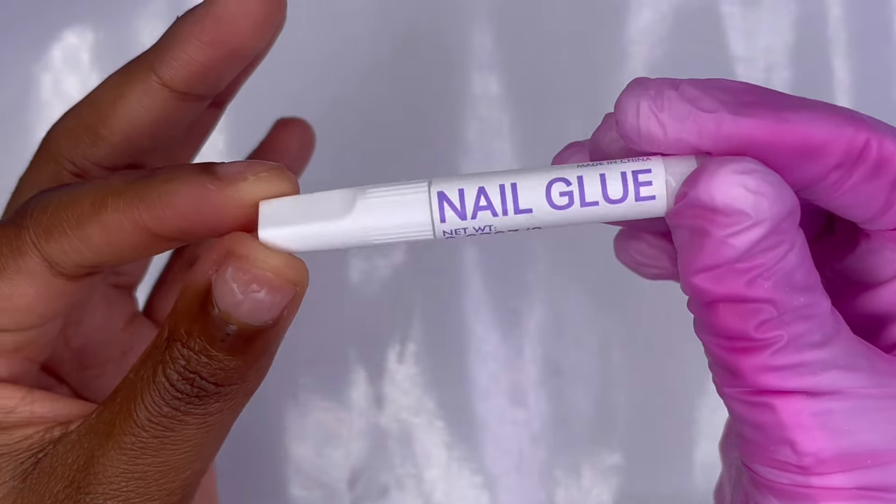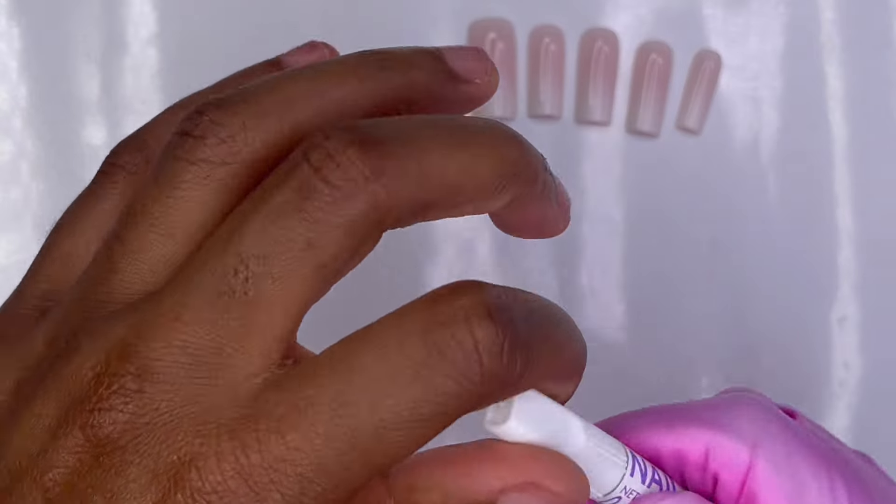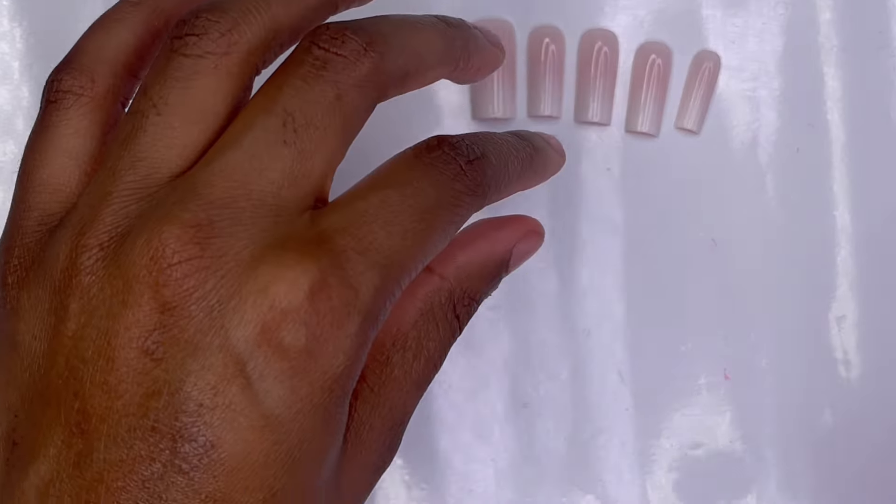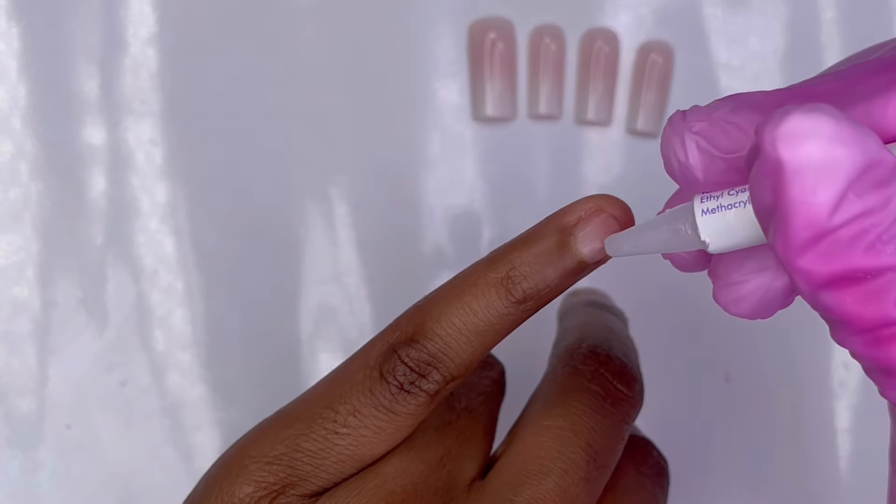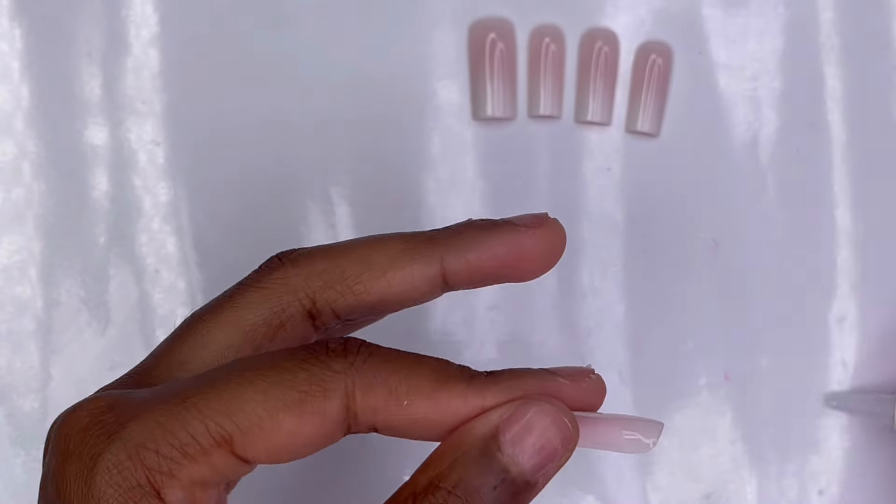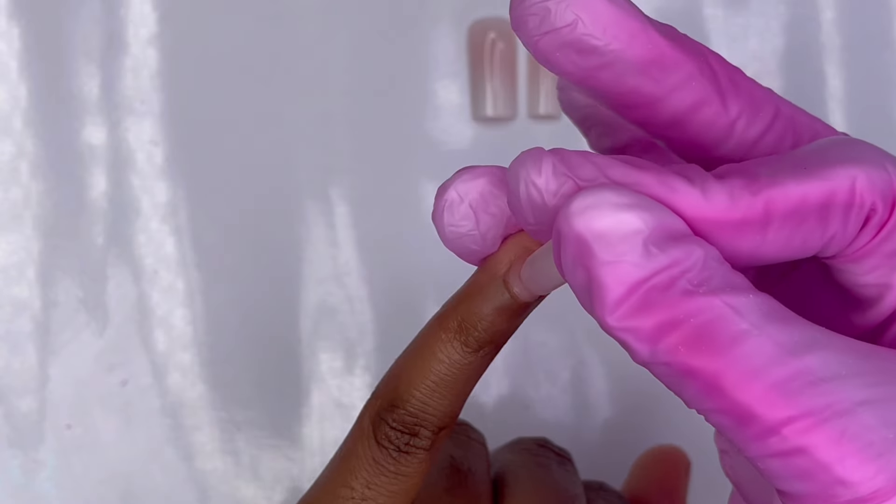To apply them, I'm going to be using the BTArtBox nail glue. I love their nail glue, it's really good. I'm just going to go in and put some on the inside of the fake nail as well as a little bit on my natural nail, and just press it and hold it into place for a few seconds.